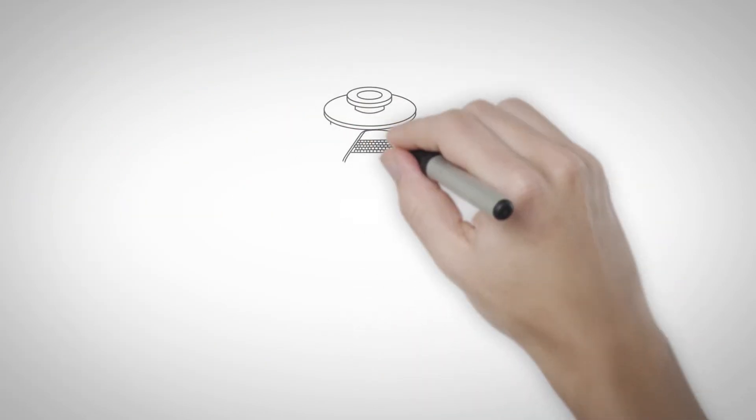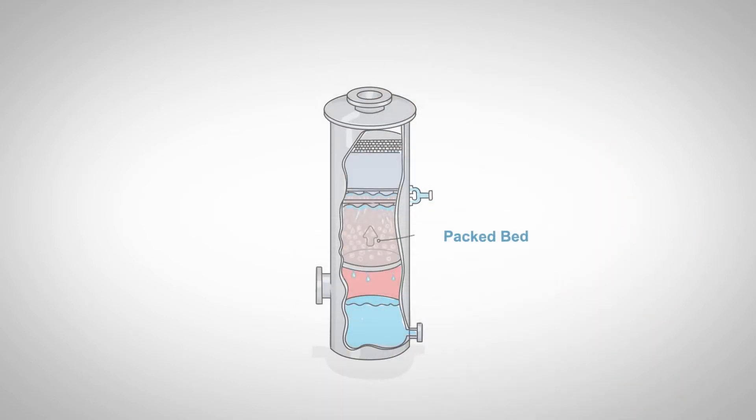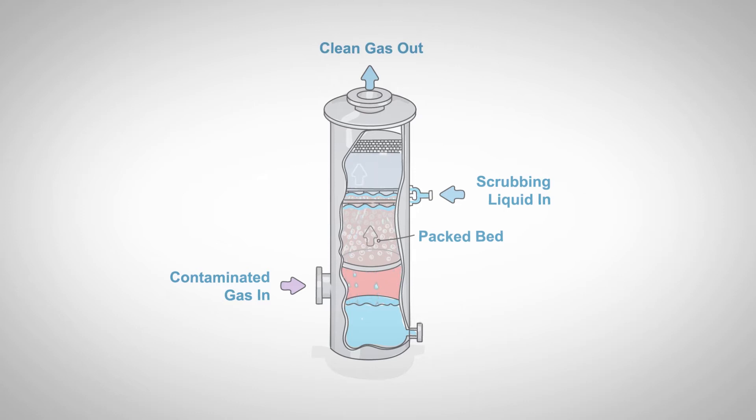With packed bed scrubbers, packing material is layered to create a large surface area for liquid particle contact. Contaminated gas enters at the bottom, and it meets a scrubbing liquid that is sprayed down from above the packing. Contaminants are then absorbed into the liquid, and the gas stream flows up the chamber through a mist eliminator and exits cleanly at the top.